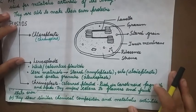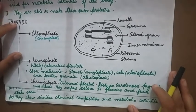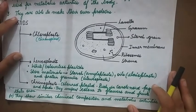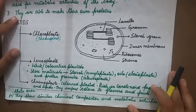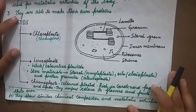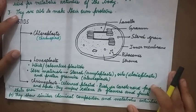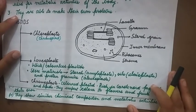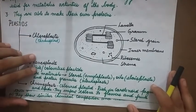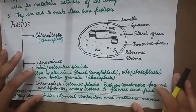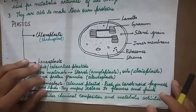Remember that mitochondria and chloroplasts are the two organelles that have their own DNA and ribosomes, and they can partially synthesize their own protein — because of which they are known as semi-autonomous organelles. Practice the diagrams from the textbook. We will discuss the rest in the next class. Thank you.